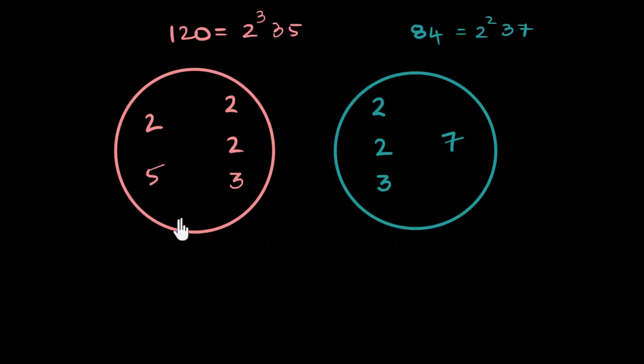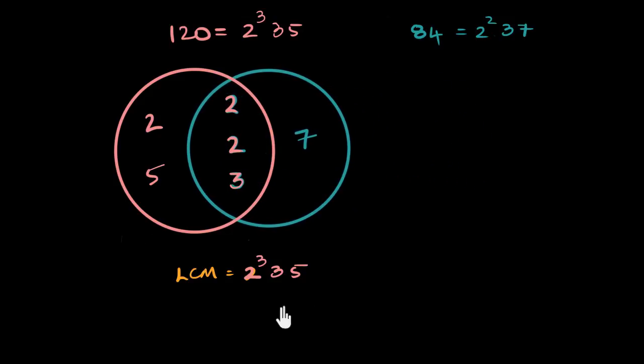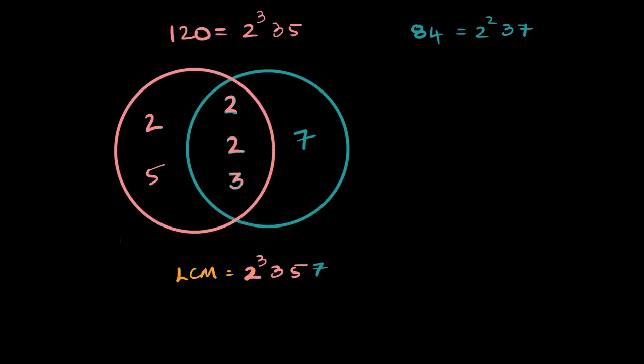Now finding the LCM simply becomes including all the things already included in one number. So if I write the LCM out over here, the LCM, that will simply be equal to 2³×3×5, which is basically just all the numbers that 120 needs, is 2³×3×5. And then all the things that 84 needs that were not already covered by 120. And to find that, we just find what's common and merge the diagram, whatever was, what's part of 84 that's already covered, two twos and one three. So that's already covered, which means the only thing left to be covered is another seven. So you multiply by that seven as well, and then you have your LCM. So let's find out what the LCM is. It's 7×5 is 35×3 is 105, 105×8. That's 840. 840. I hope that's correct.